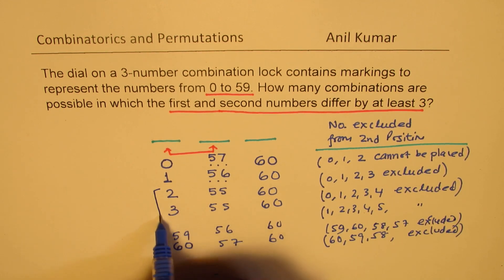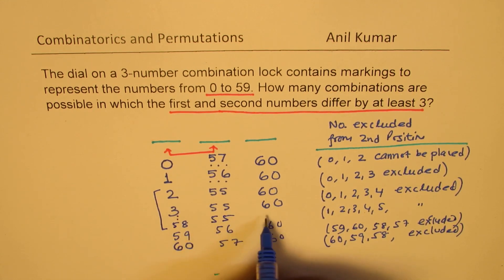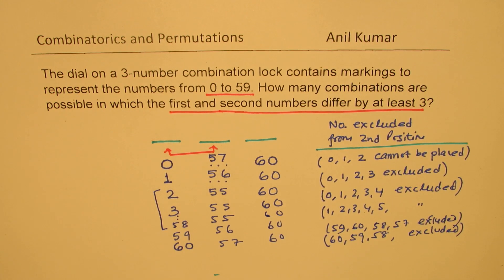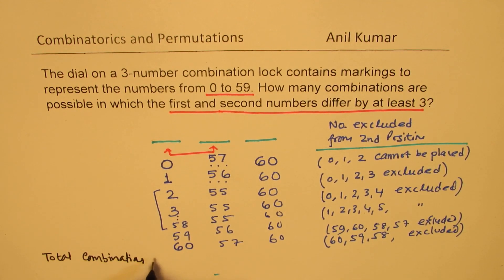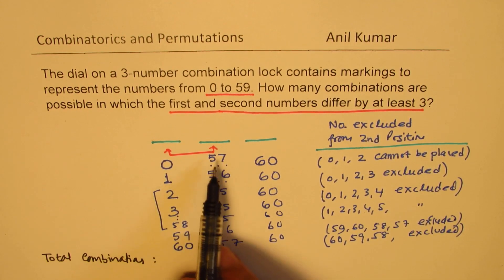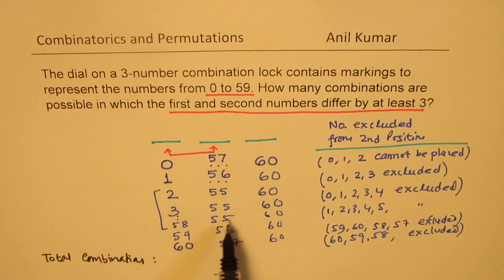So that means these combinations from 1, from 2, 3 to 58, we could have this kind of combination. Now that should give you an idea of total number of combinations. So therefore, total number of combinations is what? We need to multiply these.